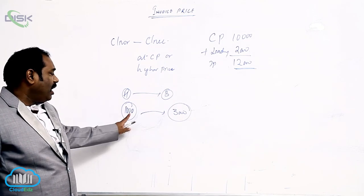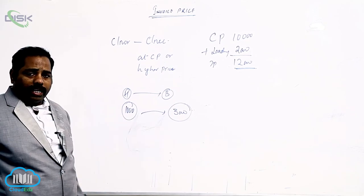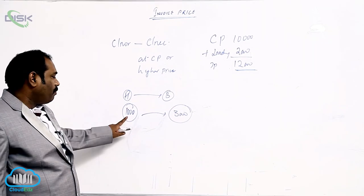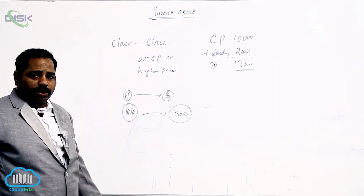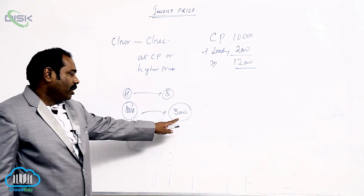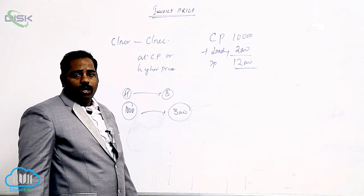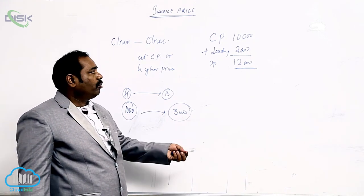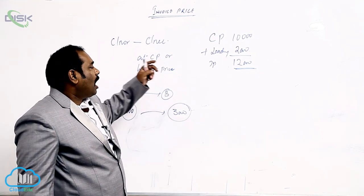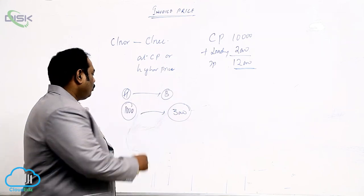So will I reveal the exact profit to the consignee? Will I say I am purchasing goods at 1,000 and asking him to sell at 3,000? No. Instead, I will add money to the cost price — that is why the goods are sent at invoice price.